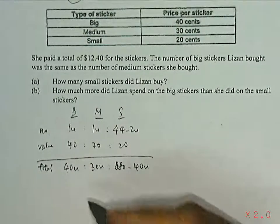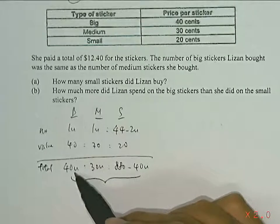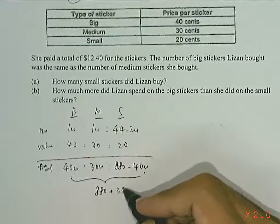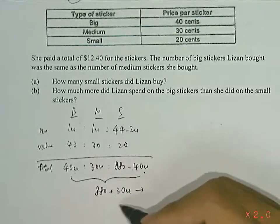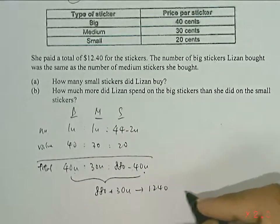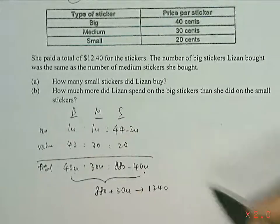So the total value of all the stickers, we'll be adding them up. 40 units minus 40 units, that cancels out. So we are left with 880 plus 30 units. It's equal to the total cost of all the stickers, which is 1,240 cents, since we are dealing with cents over here.